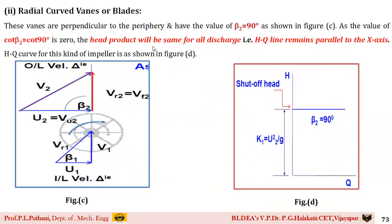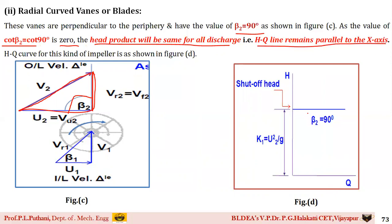The second case is radial curved vanes or blades, where β₂ = 90°. When β₂ = 90°, the outer velocity triangle becomes a right-angle triangle, and cot 90° = 0. Therefore, whatever the discharge, the head remains constant — the H-Q curve is a horizontal line parallel to the x-axis. In graph D, as Q increases from the origin, the head value remains constant. So for radial curved blades, increasing discharge produces no change in head.